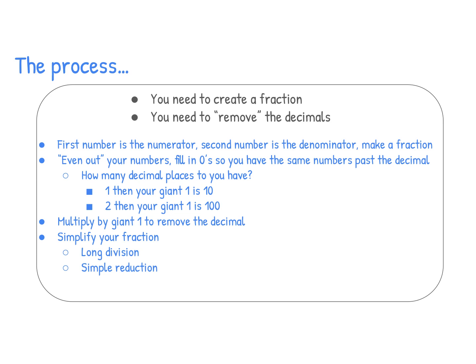The first step is to understand that the first number in the division problem will become the numerator and the second number will become the denominator. You want to put them together and make a fraction with the first number on top and the second number on the bottom. The next step is that you want to even out all of your numbers. For example, if your numerator only has one decimal and your denominator has two, you want to fill in a zero at the end of your numerator's numbers so that you have two numbers past the decimal on the top and two numbers past the decimal on the bottom.